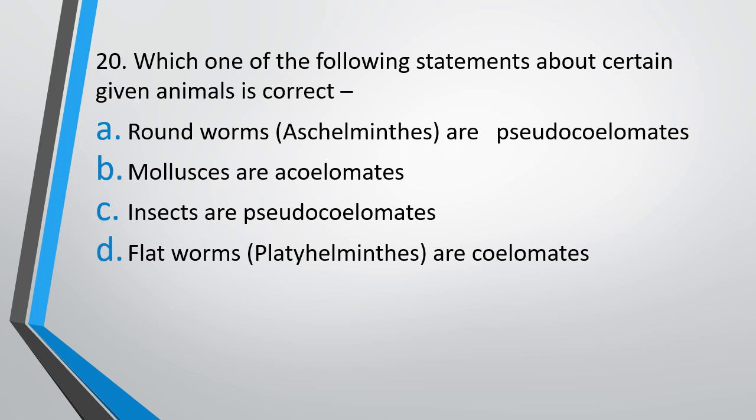Question number 20. Which one of the following statements about certain given animals is correct? Correct answer is option A. Aschelminthes are pseudocoelomates. Molluscs and insects are true coelomates. And flatworms or Platyhelminthes are acoelomate, that is there is no coelom.